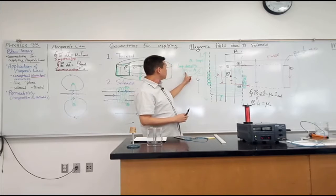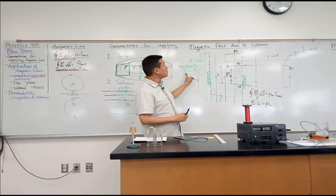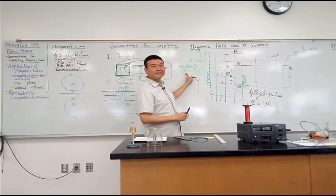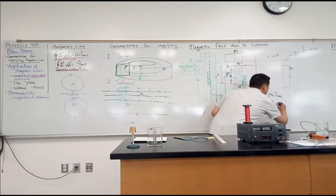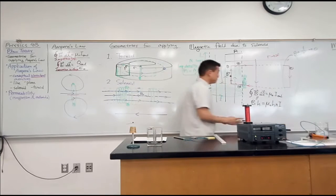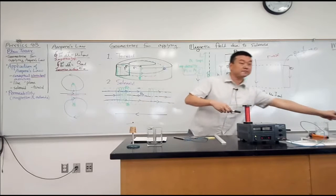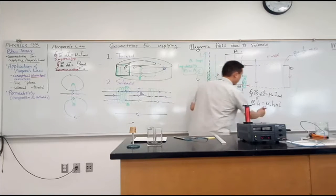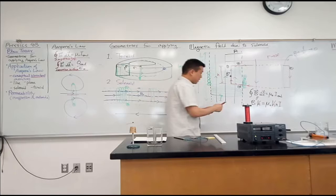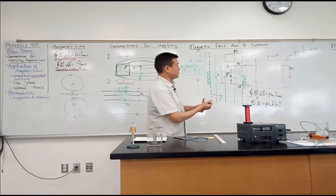H times lowercase n times I, right? Yeah. So it'll be H n I. Okay, H cancels out. Good. That's sort of what I was hoping for. So this is the result I get using this loop.